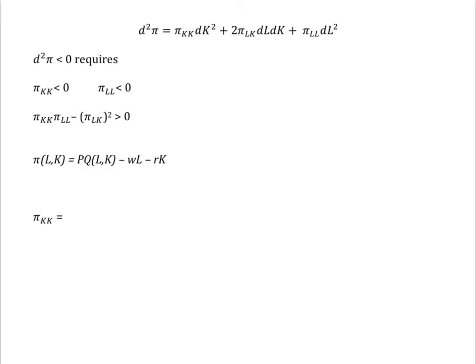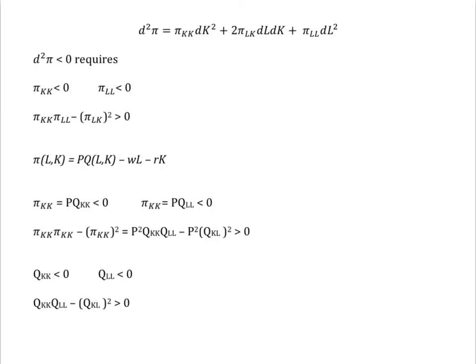Let's relate this back to production. Recall that profits are just the difference between total revenue and total costs, so that Pi KK is just P Q KK minus R. And so Pi KK is just P Q KK. There's no K in R, so that goes away. Similarly, we can get the other partial derivatives. Since price is positive, I can eliminate it, yielding a condition solely involving the production function. Thus, the second order conditions for profit maximization is the same as requiring that the firm operate on a concave portion of the production function.